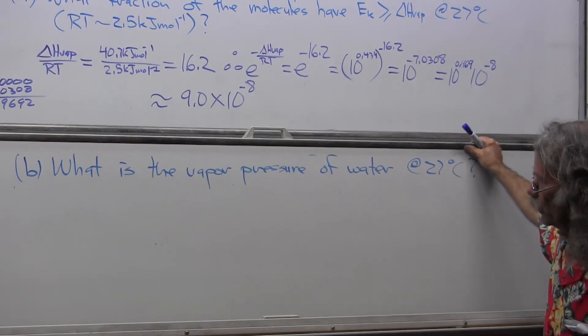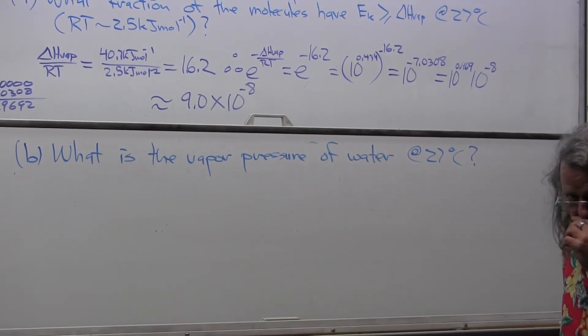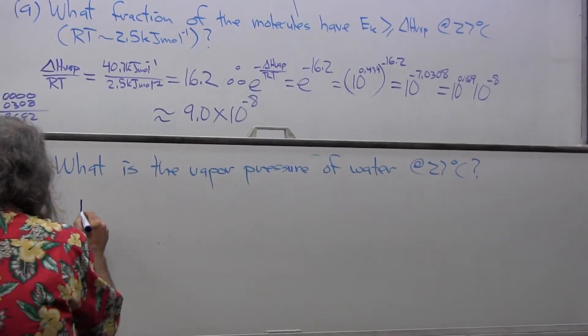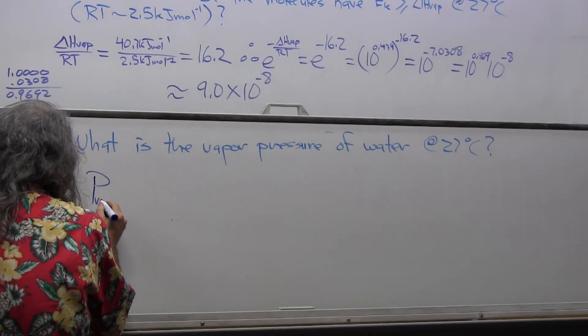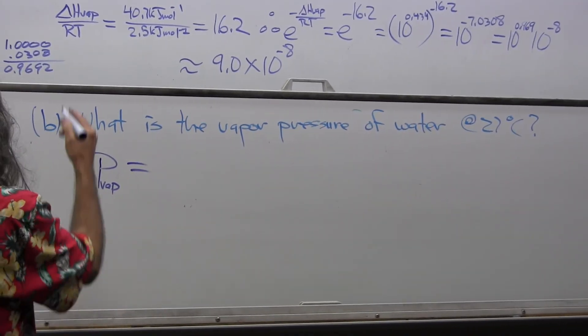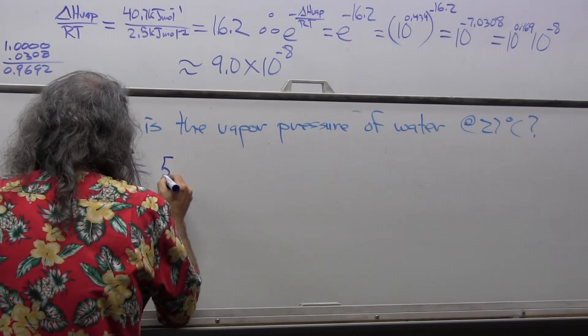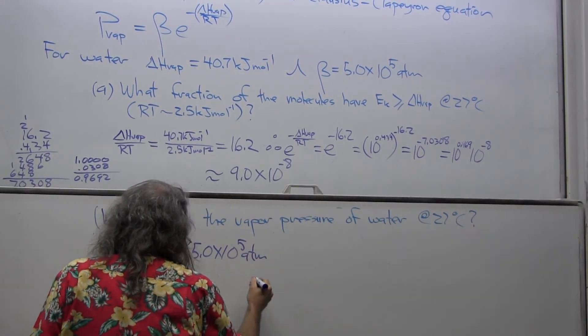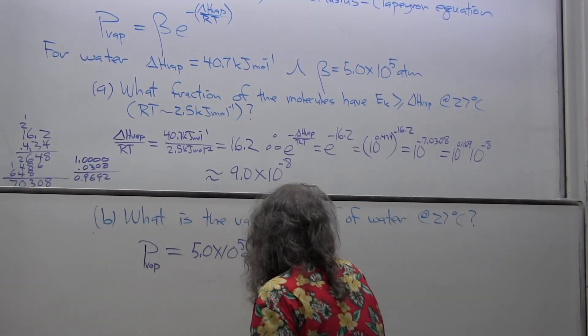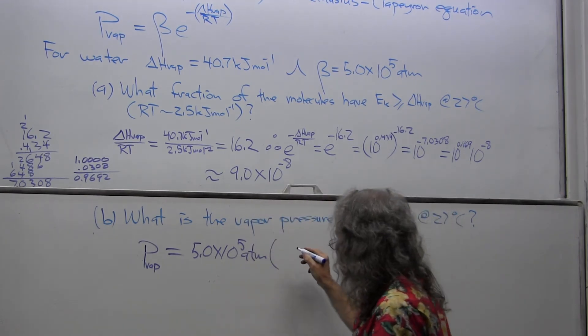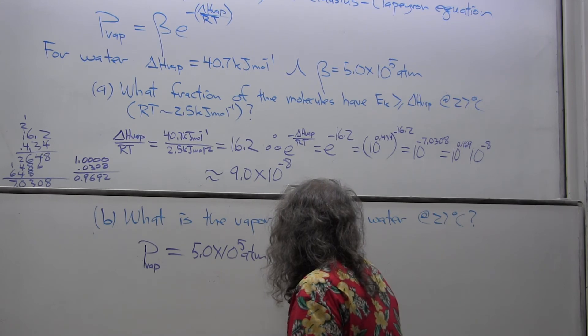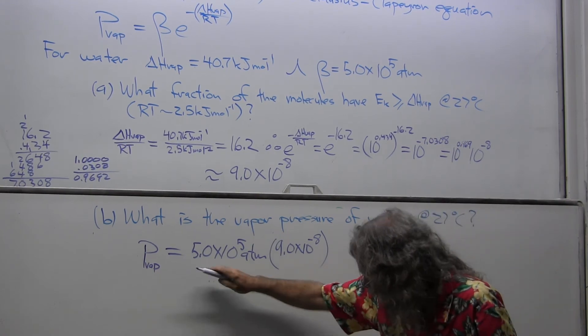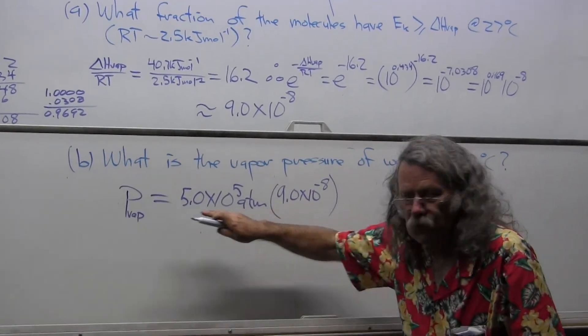For the second part of the problem, what is the vapor pressure of water at 27 degrees Celsius? This becomes an almost trivial calculation. The Clausius-Clapeyron equation is P vap equals beta term, which is 5.0 times 10 to the 5th atmospheres times the fraction, the Boltzmann factor, 9.0 times 10 to the minus 8. That has no units. Now it's very simple. We multiply the mantissa terms.